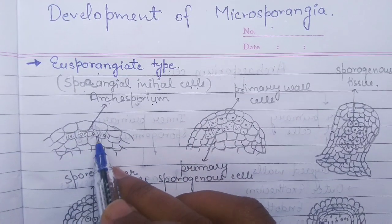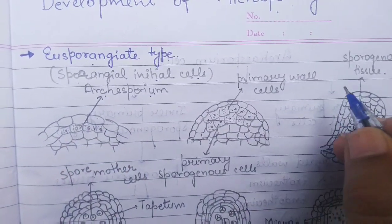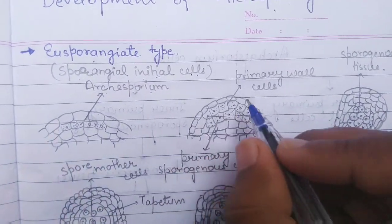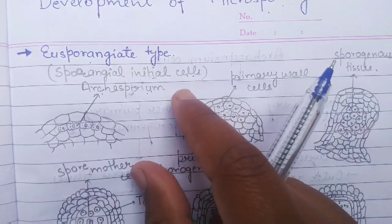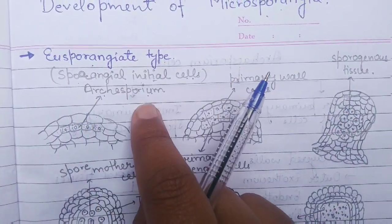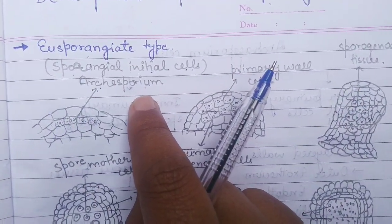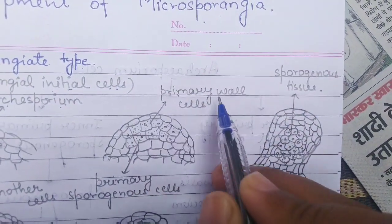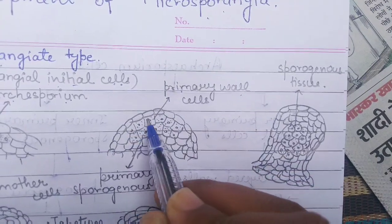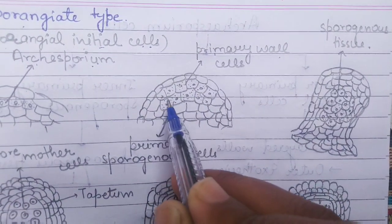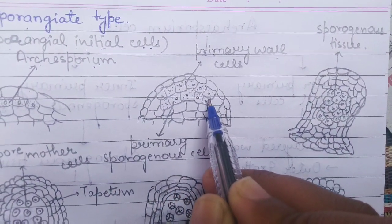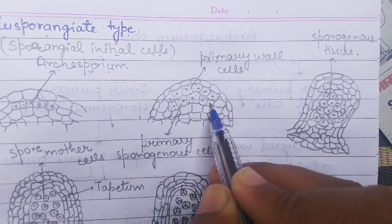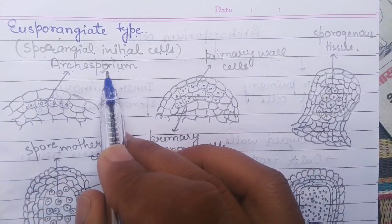The Archesporium cells divide by periclinal (horizontal) division mitotically, as they are diploid in nature. This horizontal periclinal division produces first an outer primary wall cell and inner primary sporogenous cells. So outer primary wall cell and inner primary sporogenous cell arise by the horizontal division of the Archesporium cells.